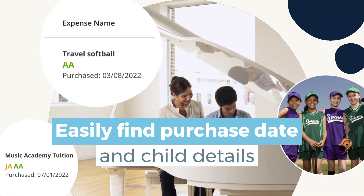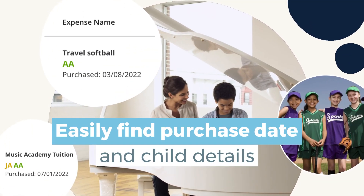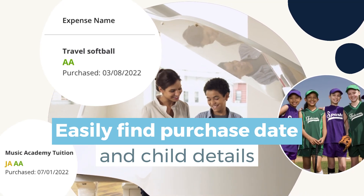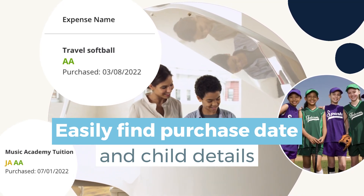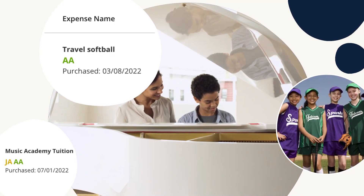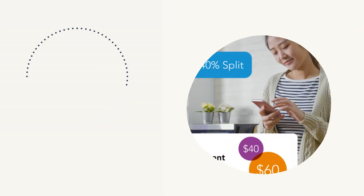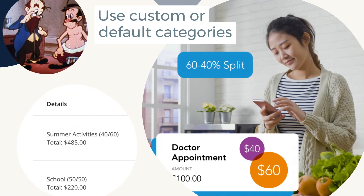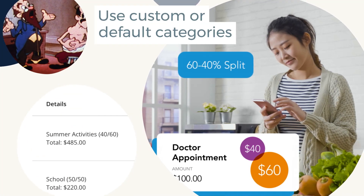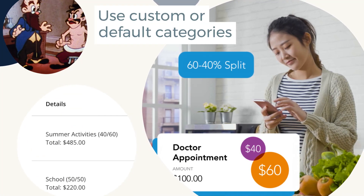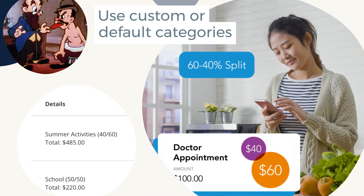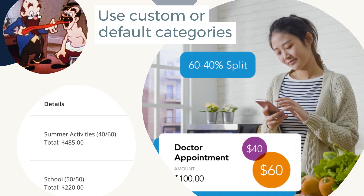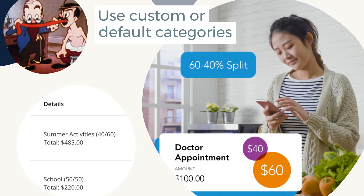You'll add a purchase date for each expense, and your children's initials will show who the expense was for. In the Details column, you'll see what category the expense belongs to, and how that category splits the total between you and your co-parent.